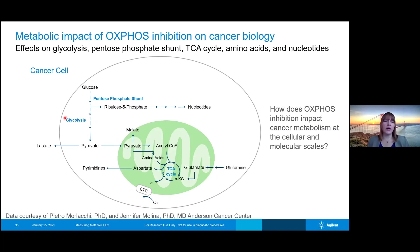In this particular case, we'll again focus somewhat on glycolysis and the TCA cycle, but we will also take a look at the pentose phosphate shunt and the production of nucleotides, as well as taking a look at aspartate and the production of pyrimidines from aspartate.